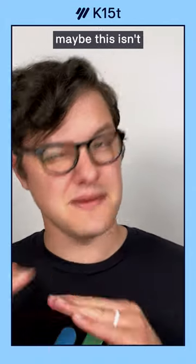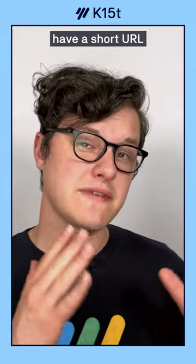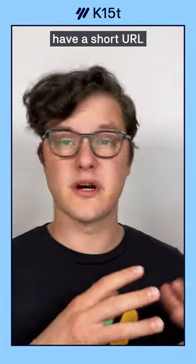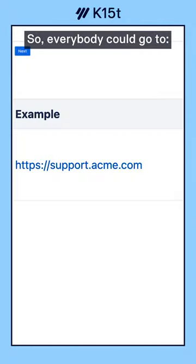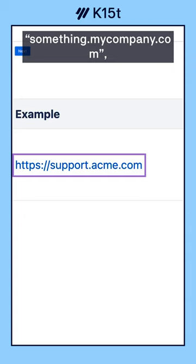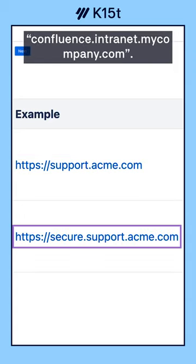Atlassian understands that maybe this isn't what you were looking for, so you can also have a short URL that you share with everyone. Everybody could go to something.yourcompany.com, but it actually takes them to confluence.internet.mycompany.com.